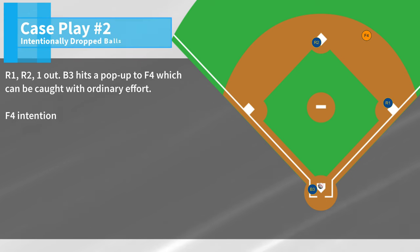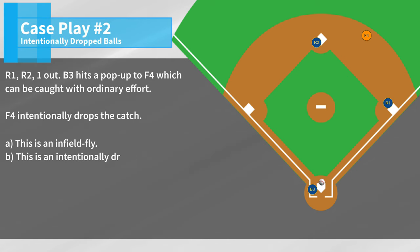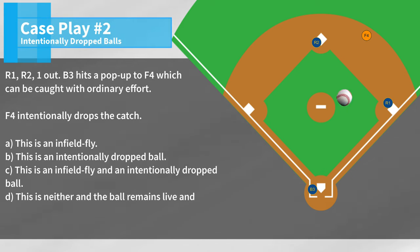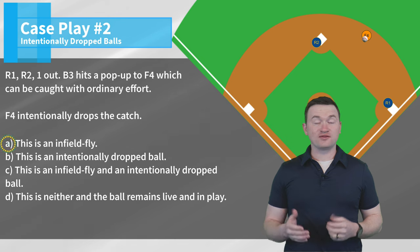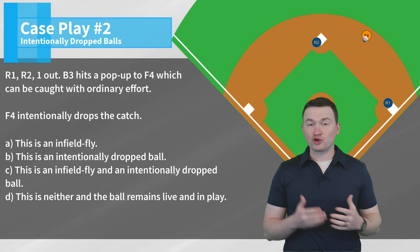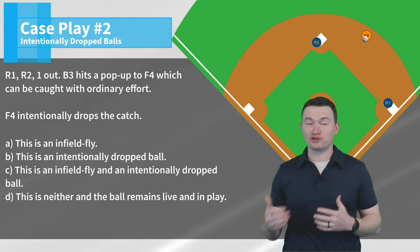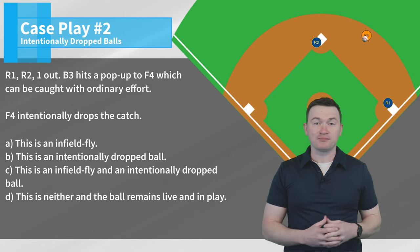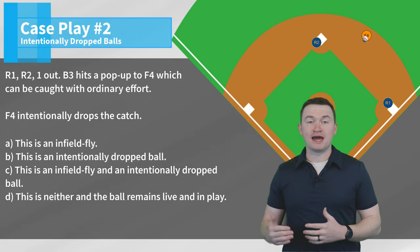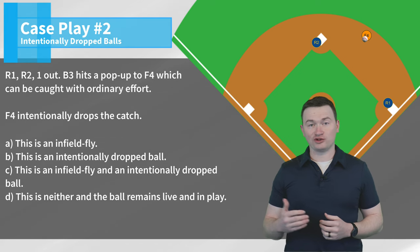Case play number two. R1, R2, one out. B3 hits a pop-up to F4 which can be caught with ordinary effort. F4 intentionally drops the catch. Is this: A) this is an infield fly; B) this is an intentionally dropped ball; C) this is an infield fly and an intentionally dropped ball; or D) this is neither and the ball remains live and in play. The correct answer is A — this is an infield fly. Remember that the intentional drop rule specifically says that it can't be intentionally dropped if it's an infield fly. In this scenario, the requirements for an infield fly are met, so it's going to be an infield fly and not an intentionally dropped ball.